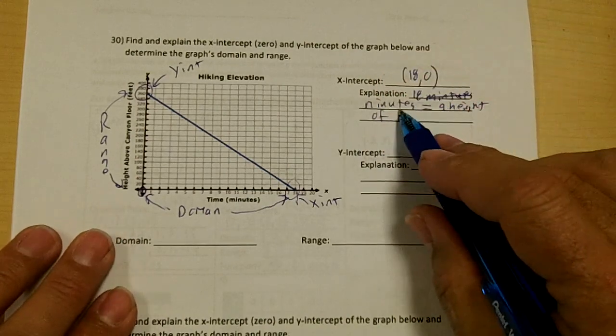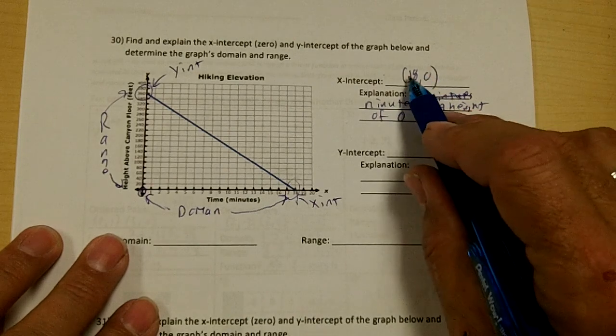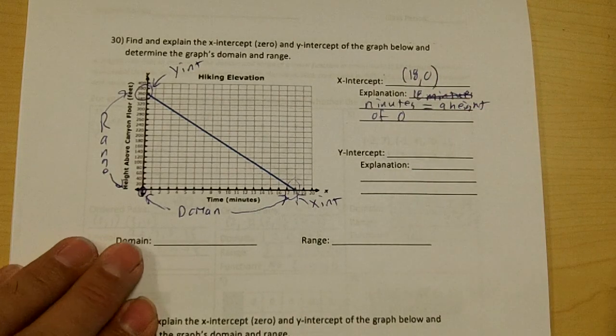So if I hike for 18 minutes, my height is zero. An input of 18 outputs zero. That's why it's called a zero.